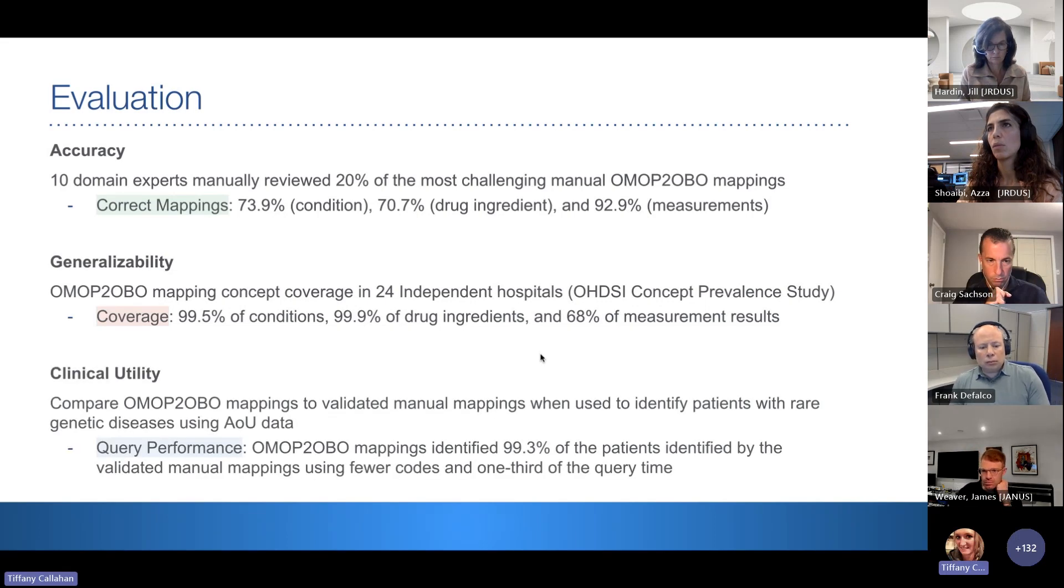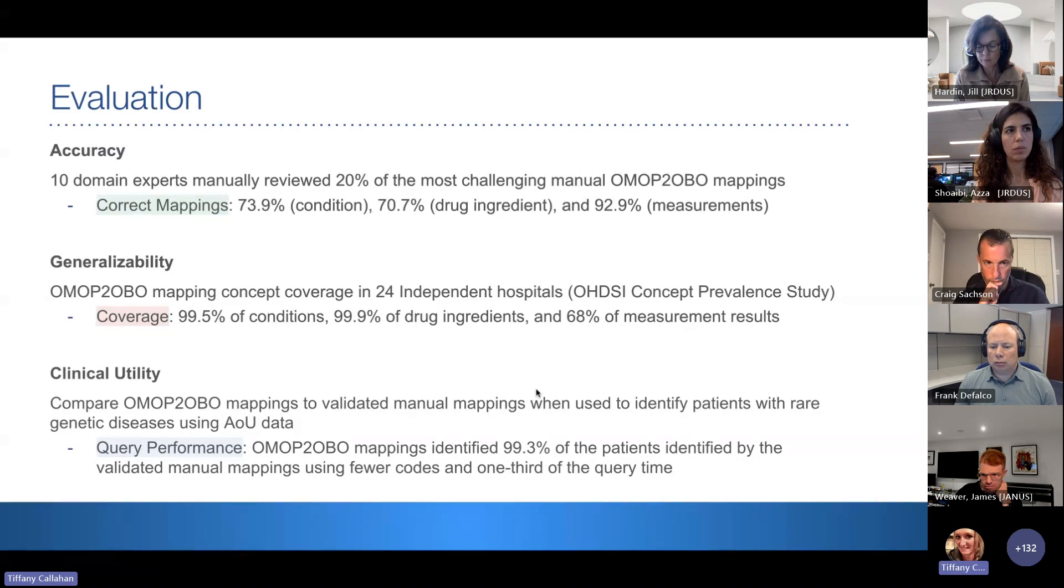Our final evaluation was to look at the clinical utility of the mapping. So we compared the OMOP to OBO mappings to validated manual mappings when used in a task to identify patients with rare disease, specifically rare genetic diseases, using the All of Us research program data. And when we examined this task, we found that the OMOP to OBO mappings when used to create these queries were able to identify 99.3% of the patients that could be found with this validated manual mapping set, so this gold standard, but using fewer codes overall and one-third the query time. So that was a positive finding for us, we could find the patients we were supposed to, using fewer codes and less compute time.